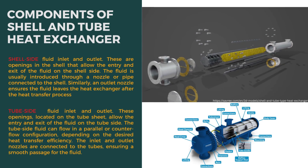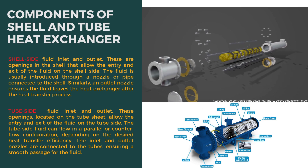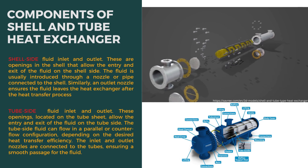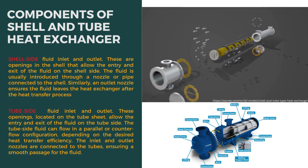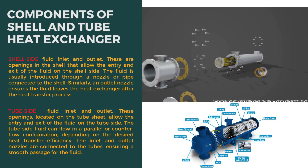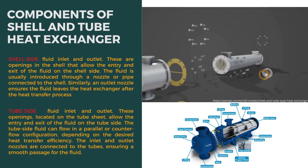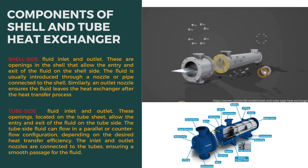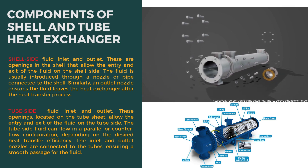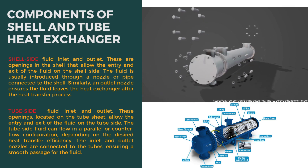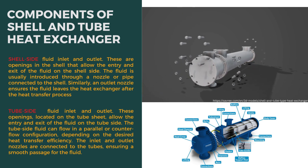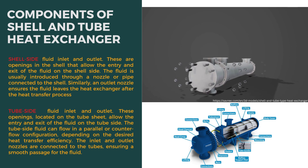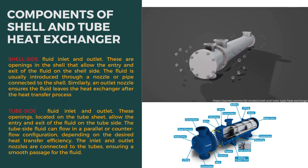Now let's move on to the shell side fluid inlet and outlet. These are openings in the shell that allow the entry and exit of the fluid on the shell side. The fluid is usually introduced through a nozzle or pipe connected to the shell. Similarly, an outlet nozzle ensures the fluid leaves the heat exchanger after the heat transfer process.